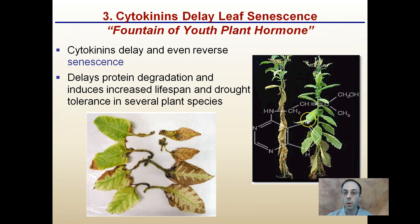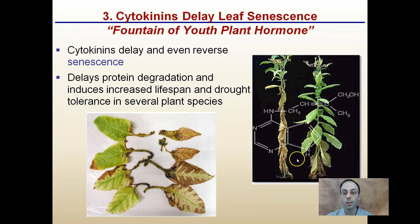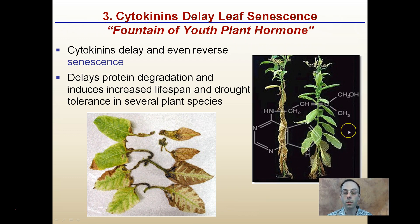A plant treated with cytokinins keeps its leaves greener longer, compared to a plant with dead, dried-out leaves. This is especially important for tobacco plants grown here in Connecticut for final wrappers for cigars. The goal is to keep those leaves as youthful and as large as possible — we don't want plants going into senescence where they become crinkly and dried out. By applying cytokinins, the fountain of youth hormone, we can keep the leaves nice, young, and youthful for longer periods of time.